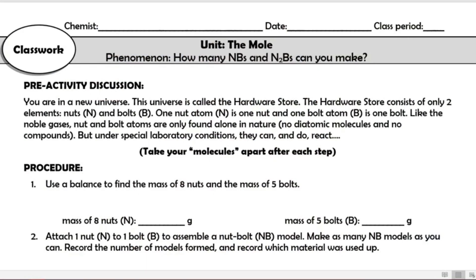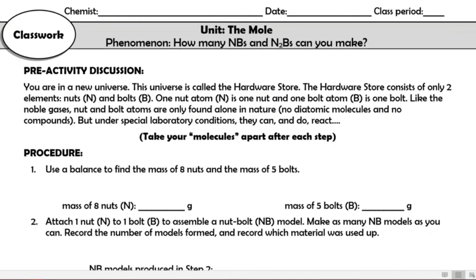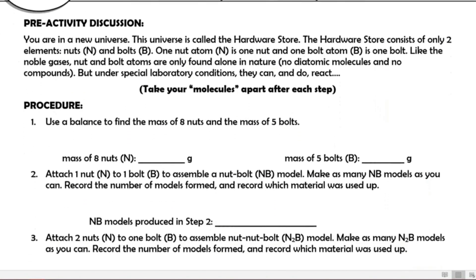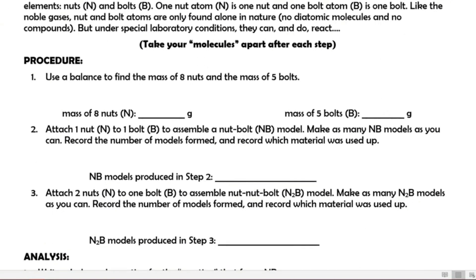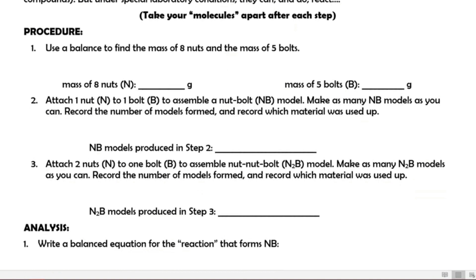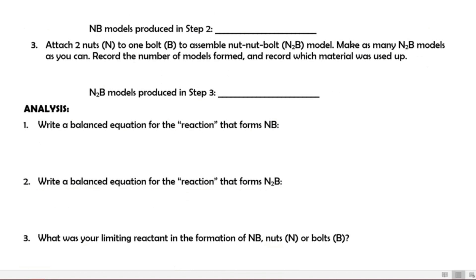I gave the students a bag of a certain number of bolts and nuts, and had the students complete an activity where the bolts and nuts represent molecules. I asked the students to find the mass of the nuts and bolts, to actually perform the synthesis of these two things, and to combine them in different ratios. Then in the analysis questions, I asked them to write the balanced chemical equation for each of these reactions.